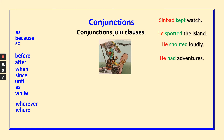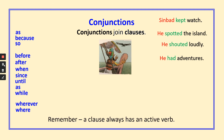And here are some clauses: Sinbad kept watch; he spotted the island; he shouted loudly; he had adventures. Now we're going to look at taking those clauses, adding a conjunction, and expanding the sentence. Remember, a clause always has an active verb: kept, spotted, shouted, had.